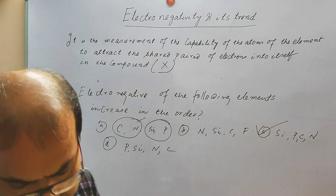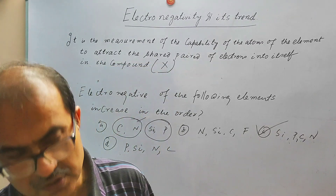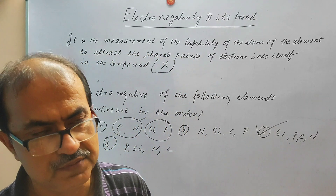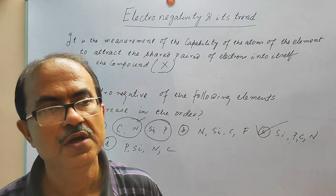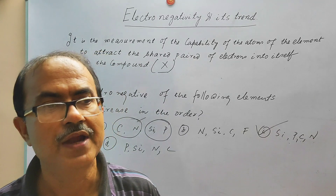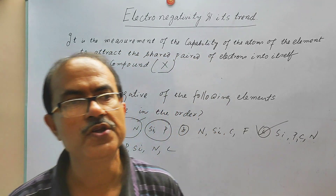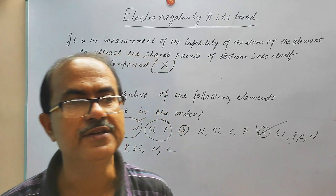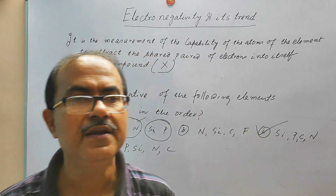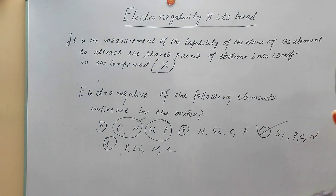You have to keep in mind this relationship: as you go across the period, electronegativity goes on increasing; as you go down the group, electronegativity goes on decreasing. That is all for today's video. If you like this video, share it with your friends. In the next video we will discuss different things in the same chapter. Till then, all the best — thank you.